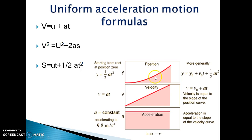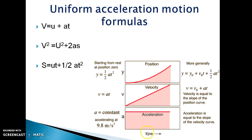Here the first graph shows position versus time. In this graph the particle is starting from the 0th position. The second graph is between velocity and time. Here the particle is starting from rest, so the initial velocity v₀ = 0, and we get the equation v = at. The third graph is acceleration versus time, where the acceleration is constant, so the graph shows a horizontal straight line.